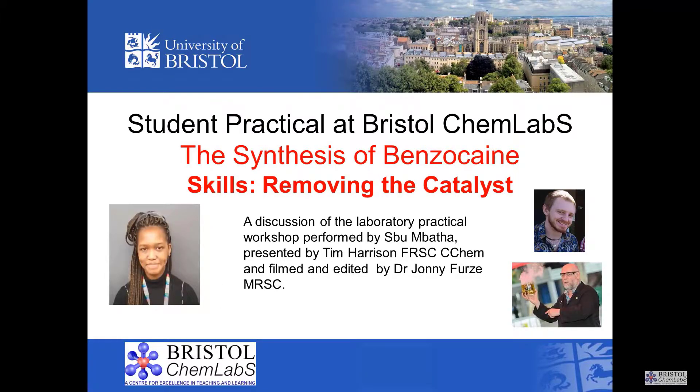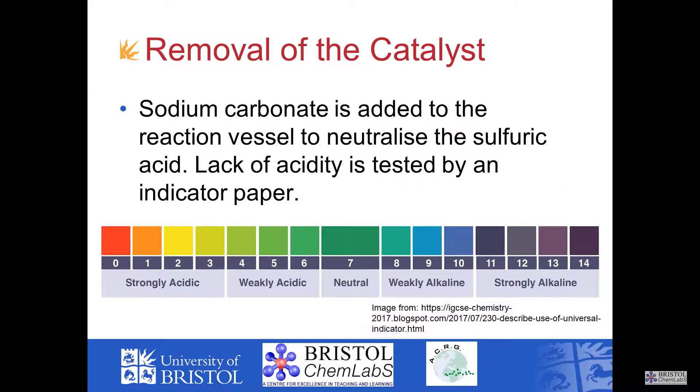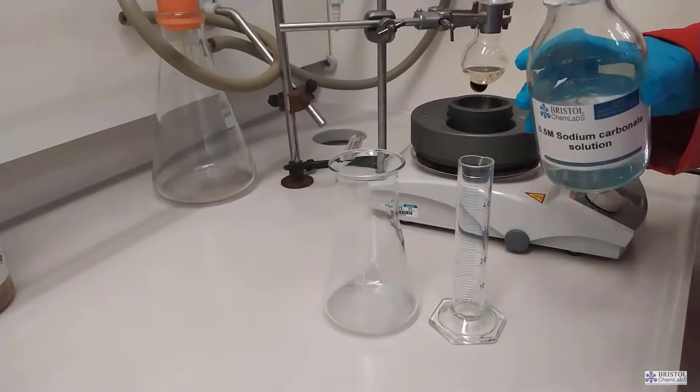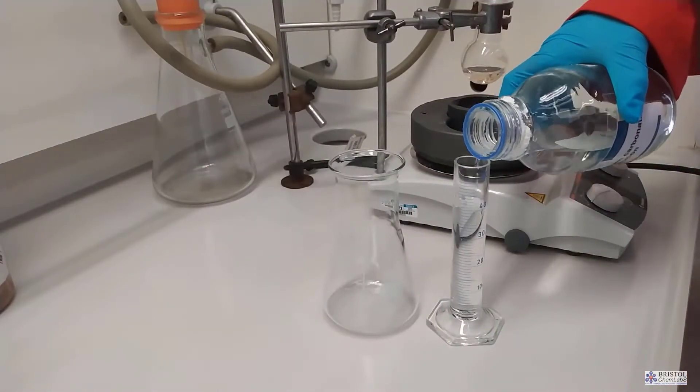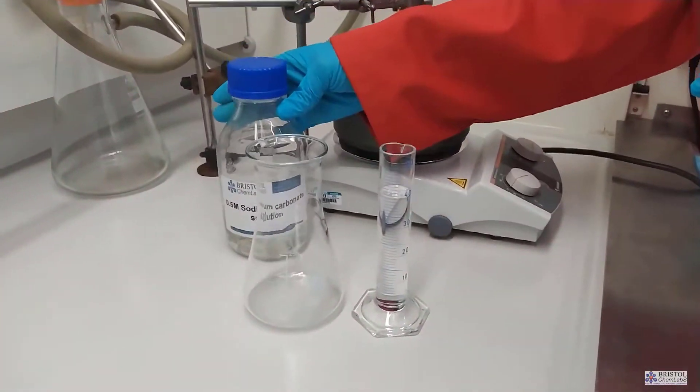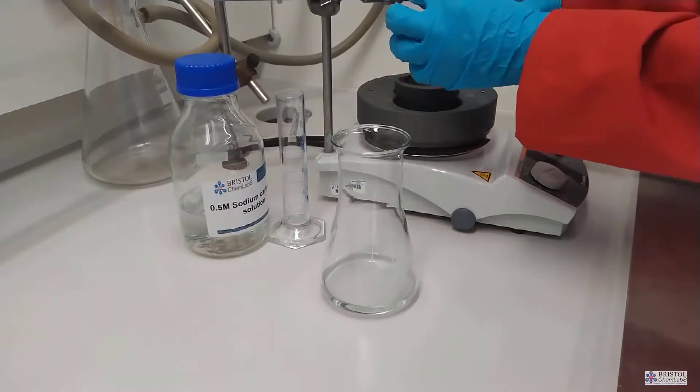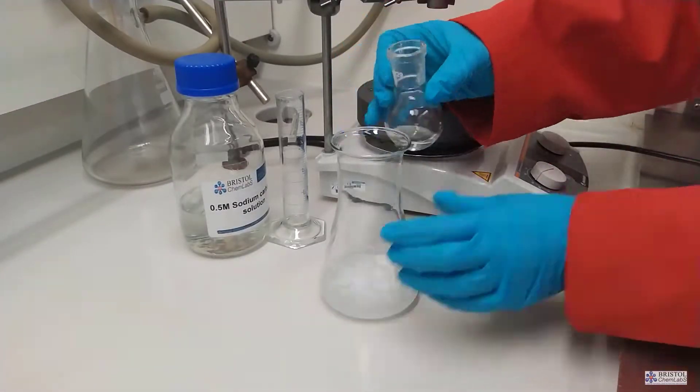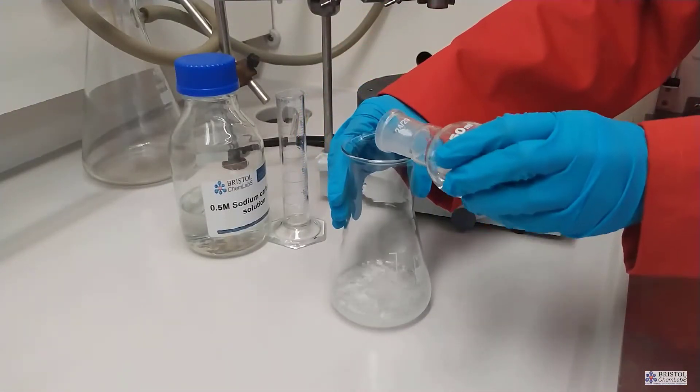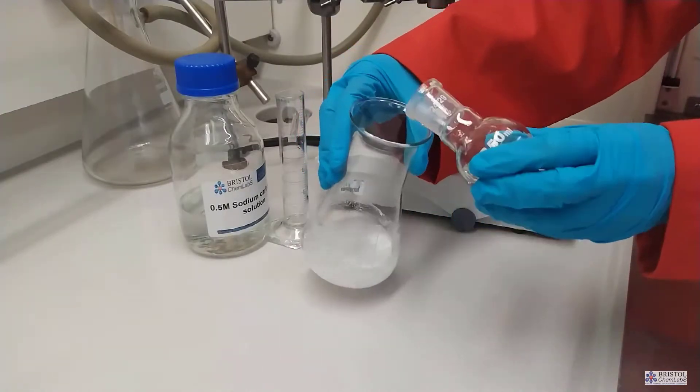Once the reactant mixture has finished its reflux and has been allowed to cool we now need to get rid of the catalyst. Catalysts in this case concentrated sulfuric acid don't get used up during a reaction so we're going to neutralize the sulfuric acid using sodium carbonate solution. Our reaction mixture is poured into a measured volume of sodium carbonate and is left to react. Acid plus carbonate makes salt plus water plus carbon dioxide.